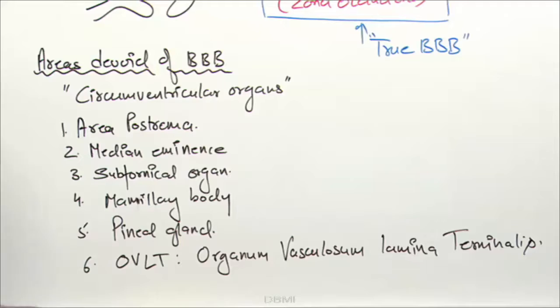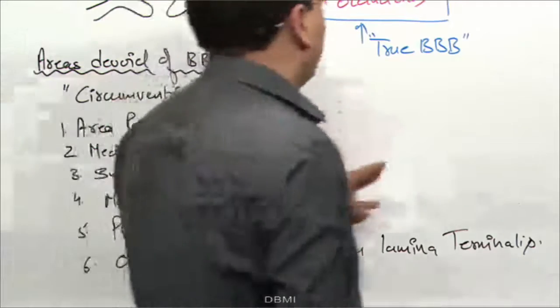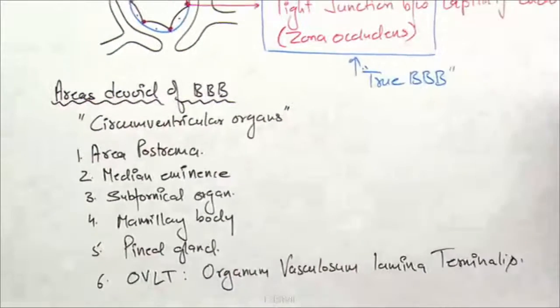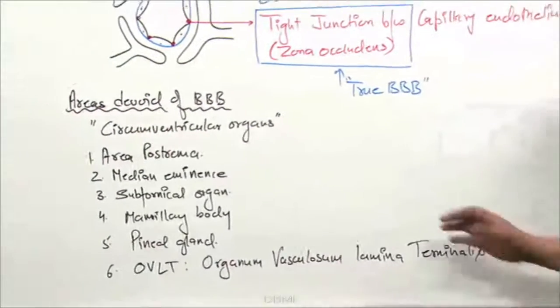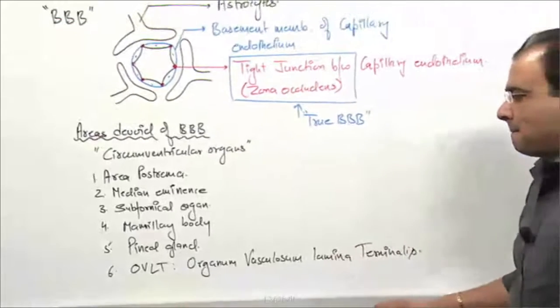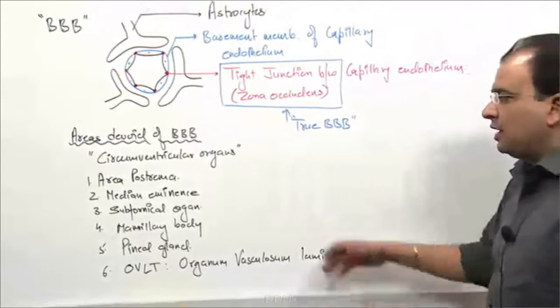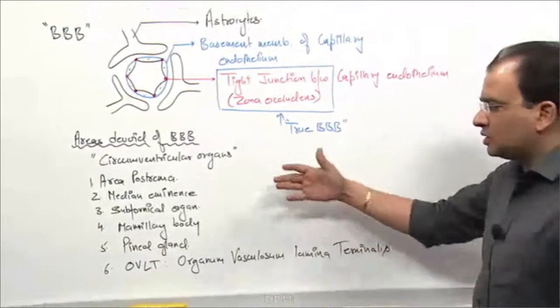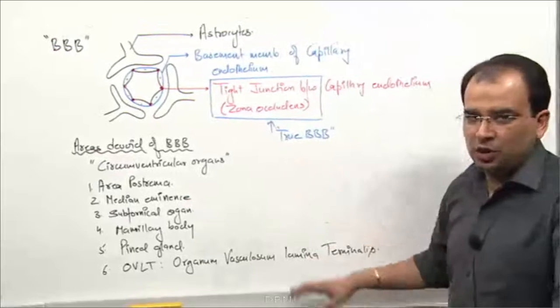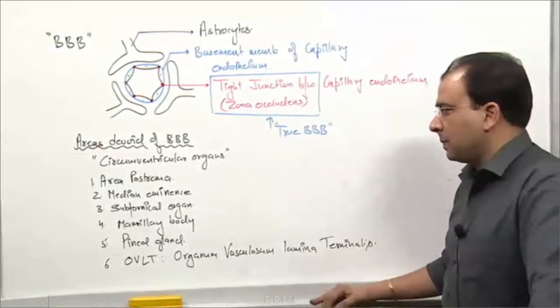These are the areas devoid of the blood brain barrier, and we will keep coming across these structures as we go deeper into neuroanatomy.